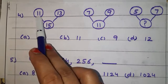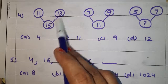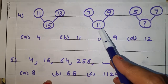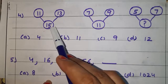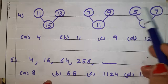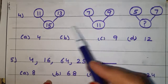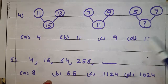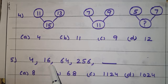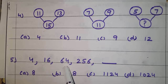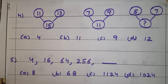Question number 4: you have to find the rule followed in the two figures and choose the correct option. Question number 5: the sequence is 4, 16, 64, 256, dash. See how after 4 we get 16, and after 16 we get 64. In the same way find the missing number from the given options. I hope you have understood the questions.